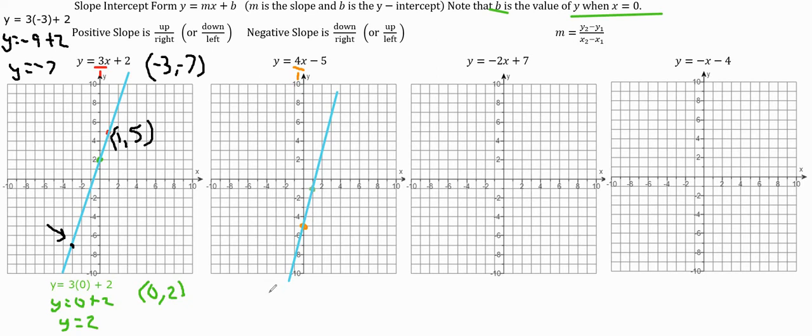We could have done this with algebra to find a second point. We could pick any value of x except 0 because we already used that for the y-intercept. Let's put in 2 for x. If x is 2, we've got y equals 4 times 2, which is 8, and 8 minus 5 is 3. That's the point 2, 3, which checks out on our graph.